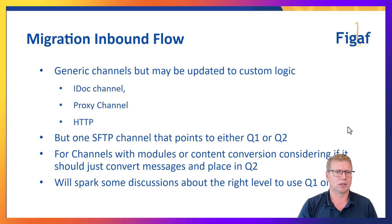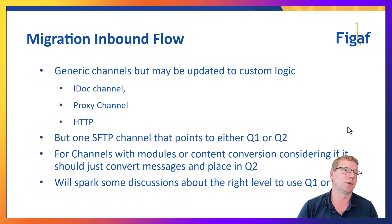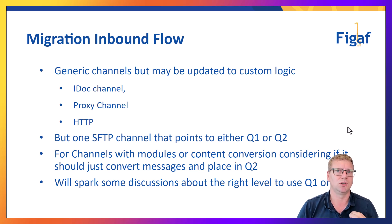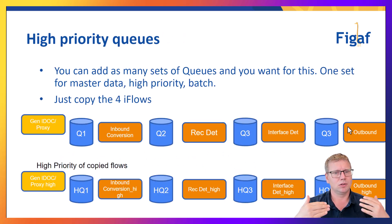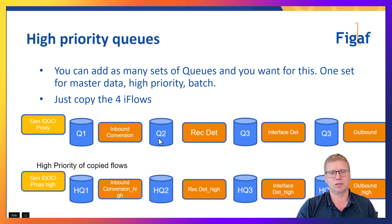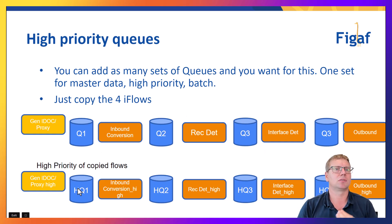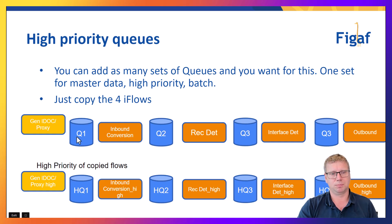We talk a lot about this in a migration context and it does make sense there, but you can also use it for all the other generic processes in your landscape where you want to separate these scenarios. You can also have multiple different versions of this running simultaneously - one for high priority and one for low priority queues - which makes it a lot easier to separate the landscape.